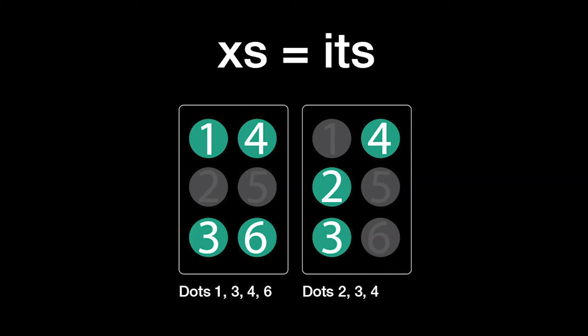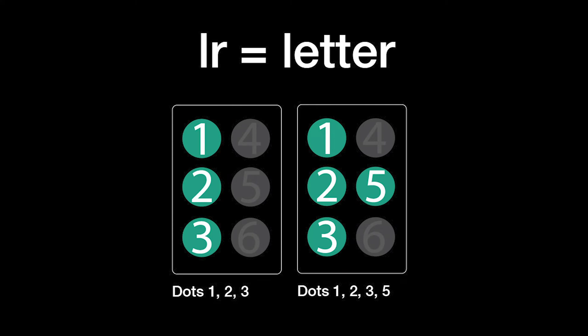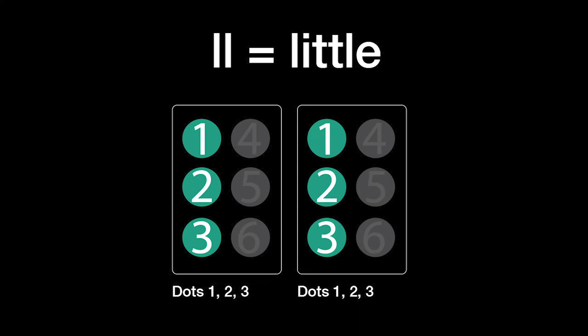Its is X-S: dots 1, 3, 4, and 6, plus dots 2, 3, and 4. Itself is X-F: dots 1, 3, 4, and 6, plus dots 1, 2, and 4. Letter is L-R: dots 1, 2, and 3, plus dots 1, 2, 3, and 5. Little is L-L: dots 1, 2, and 3, plus dots 1, 2, and 3.